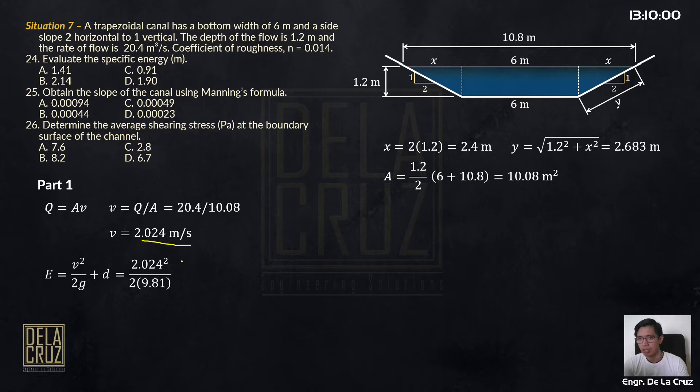Velocity load over 2 times gravity plus the depth 1.2. So you have 1.409, 1.41 meters.